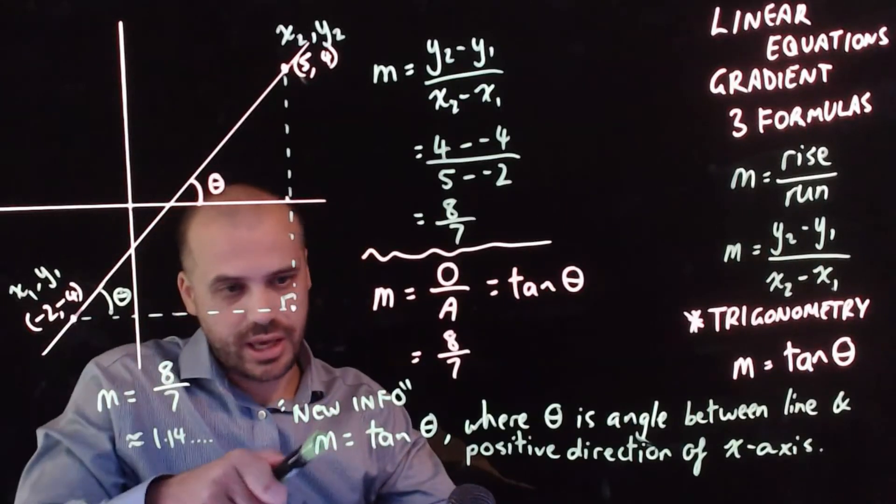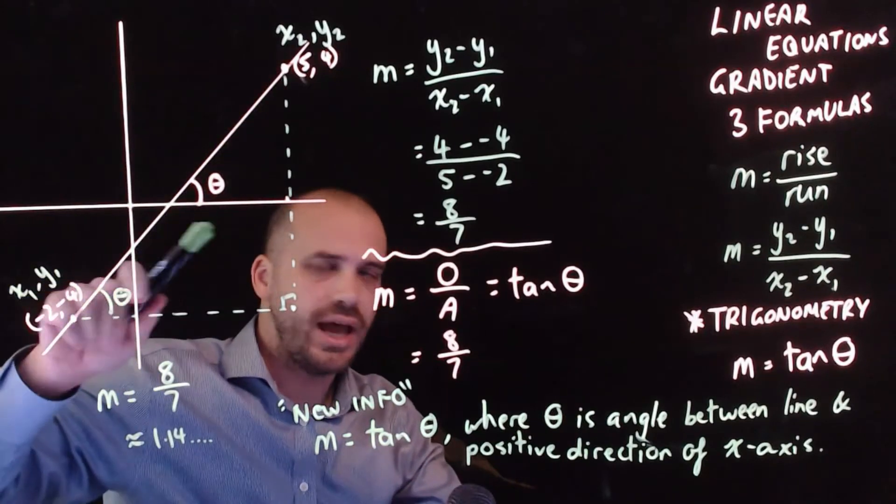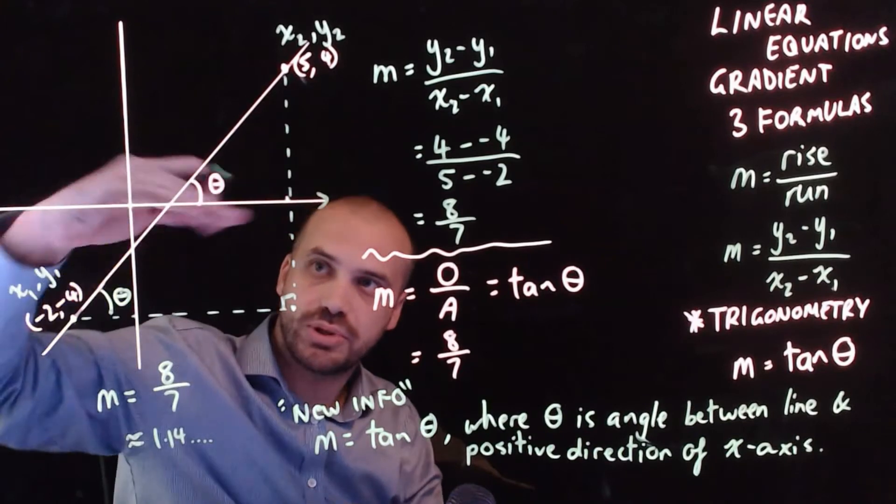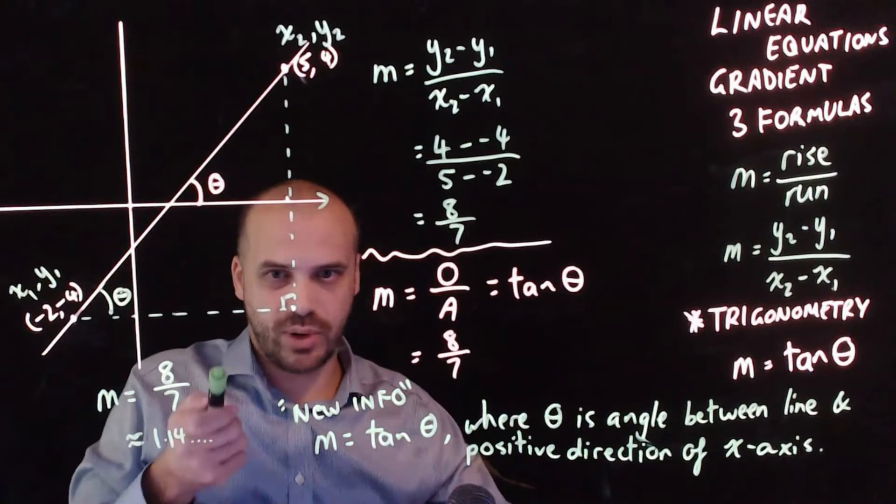So that's our new info. m equals tan theta where theta is the angle between the line and the positive direction of the x-axis between this bit here. And that can look a little bit funny when the line is going the other way.